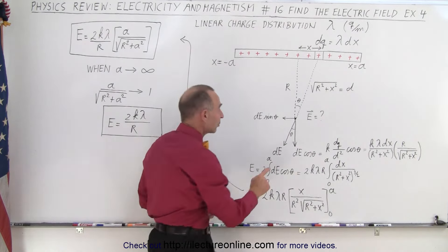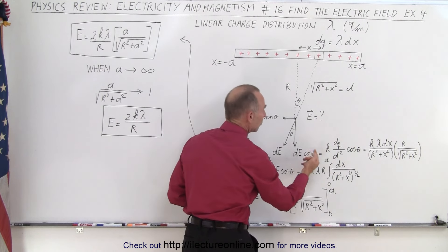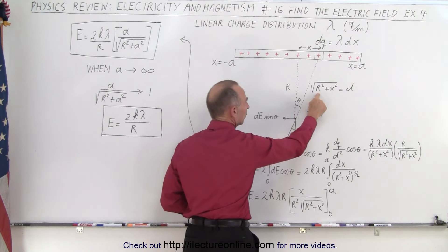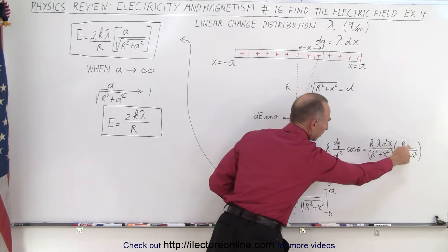Then we have to multiply that one times the cosine of theta, which by definition is equal to the ratio of the adjacent side r to the hypotenuse, which is the square root of r squared plus x squared. So that's where this comes from.